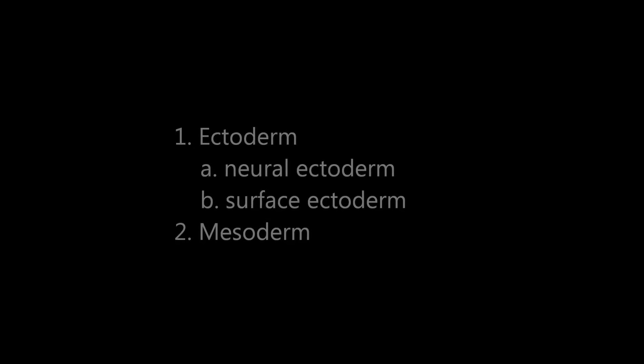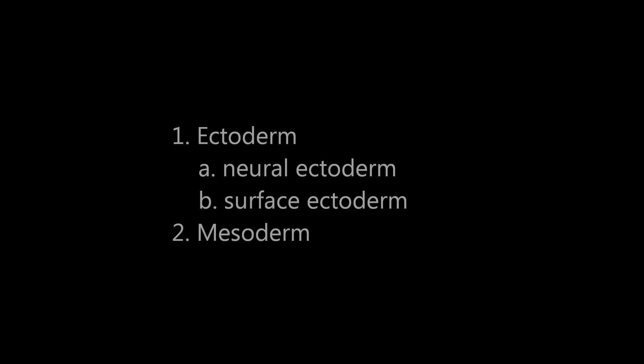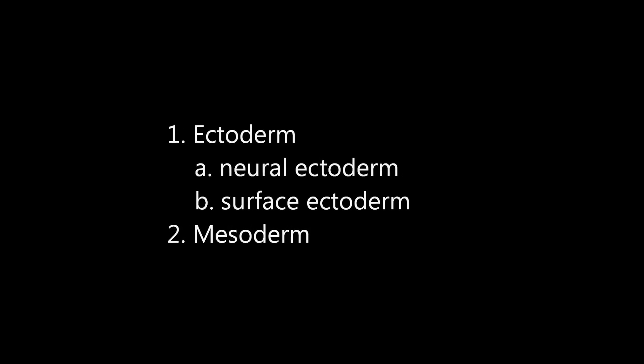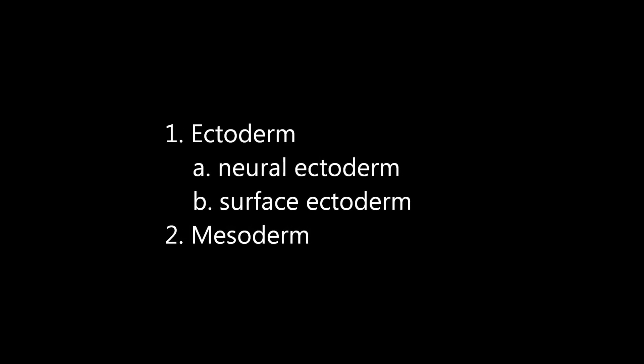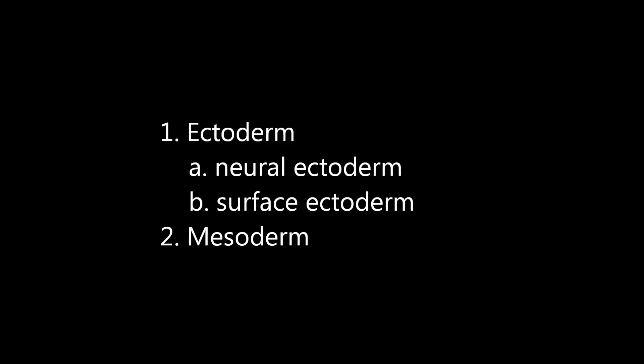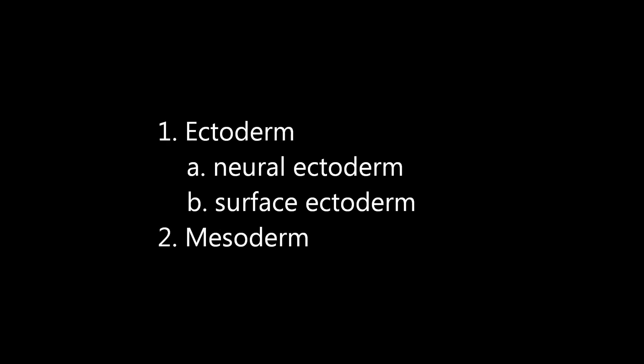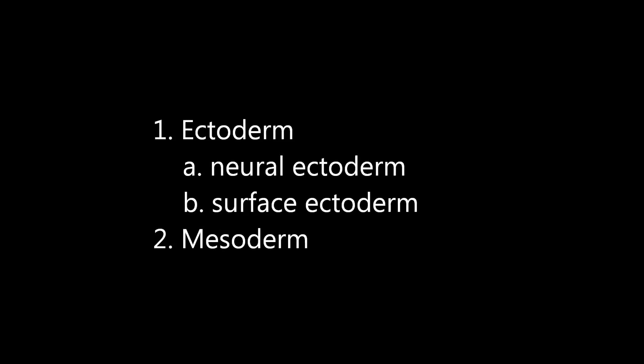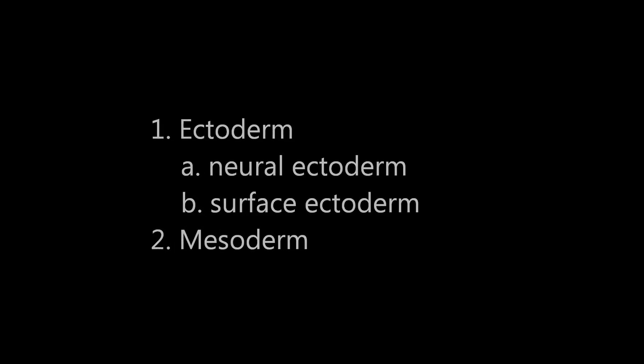In summary, the eye is essentially formed from both the ectoderm and mesoderm. The ectoderm is of two types: firstly, the neural ectoderm derived from the neural tube, and secondly, the surface ectoderm on the side of the head.